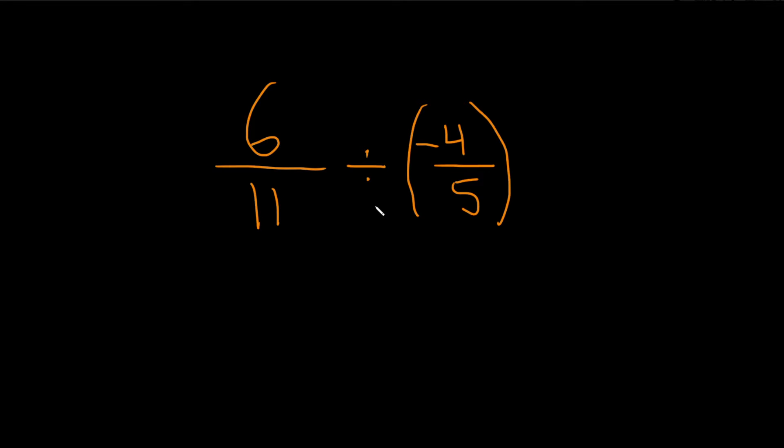6 over 11 divided by negative 4 over 5. So the very first step in a division problem is to change the division to multiplication by the reciprocal.